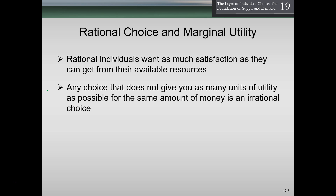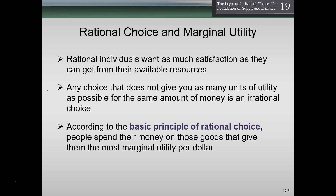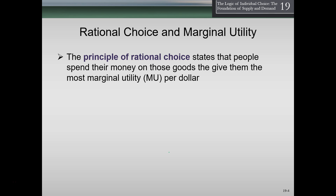Is it worth it for us to do it on the margin? If it is, then we'll buy it. According to the basic principle of rational choice, people spend their money on those goods that give them the most marginal utility per dollar. The principle of rational choice states that people spend their money on those goods that give them the most marginal utility per dollar.